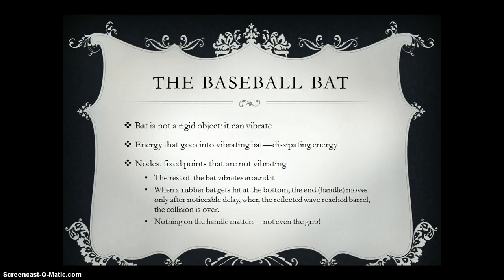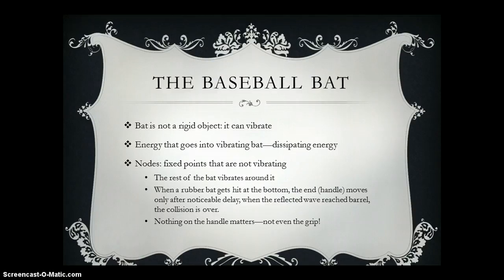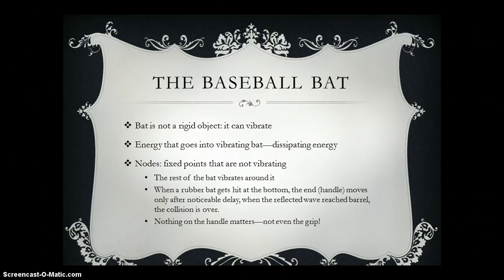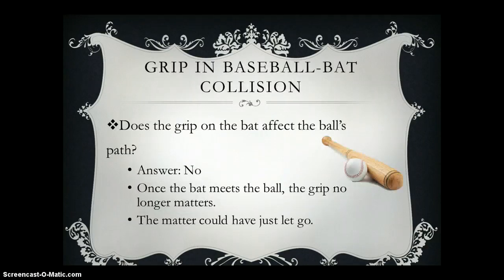The baseball bat is not a rigid object — it can actually vibrate. Energy that goes into the vibrating bat is dissipating energy. There are nodes on the bat, which are fixed points that are not vibrating, but the rest of the bat vibrates around them. When a rubber bat gets hit at the bottom, the end or the handle moves only after a noticeable delay. When the reflected wave reaches the barrel, the collision is over, so nothing on the handle really matters — not even the grip.